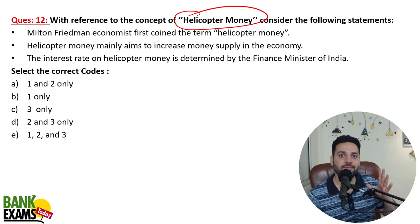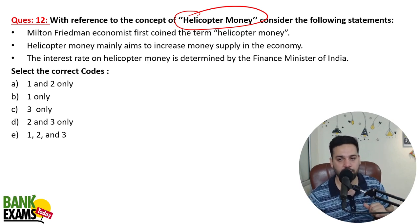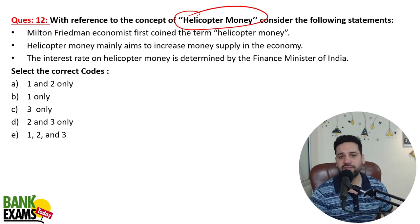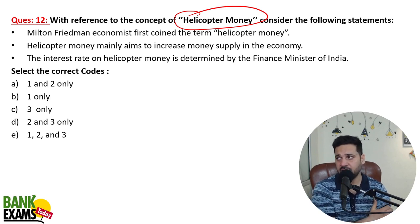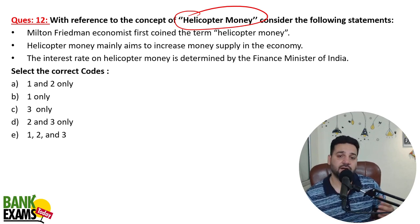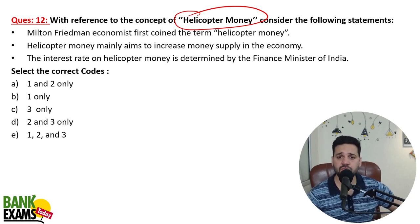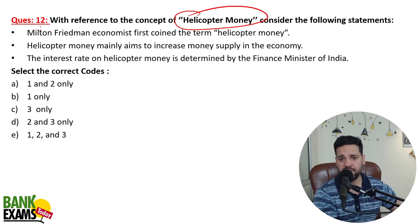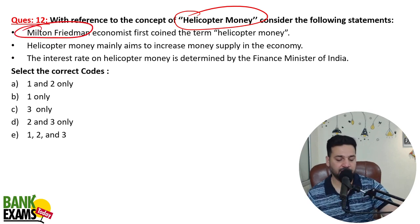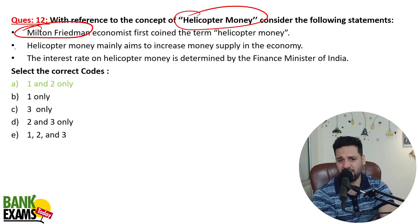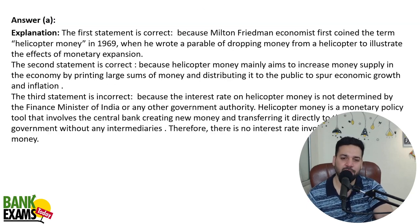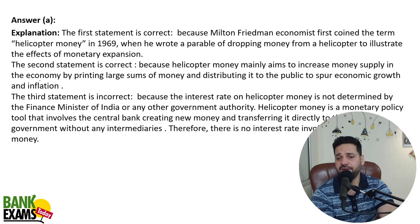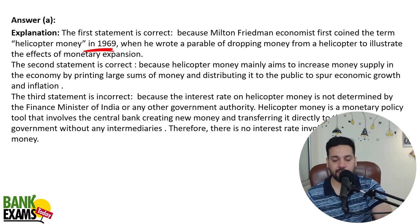Nowadays the government doesn't use helicopters — it directly deposits money into your account. That happened in the US at the time of COVID. The government of USA deposited $650 into everybody's account. Even in India the government does that via PM Kisan Yojana. This concept was introduced by Milton Friedman in 1969. It increases the money supply in the economy, but there is no interest rate on helicopter money.